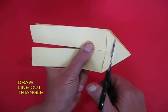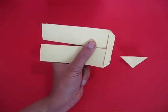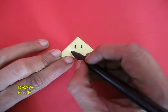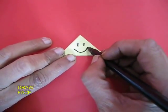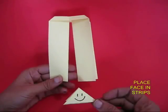Now draw a line and cut a big triangle as shown. On this triangular portion using a sketch pen, draw two eyes and a happy face.